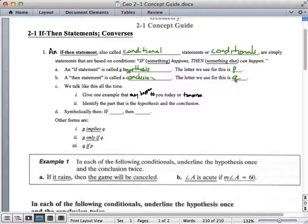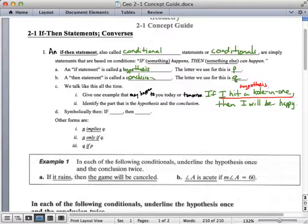And then the letter we use for conclusion is Q. All right, we talk in if-then statements all the time, hypothesis and conclusions. I would like for you to give one example that may happen to you today or tomorrow. Like, here is mine, and then you make up your own. If I hit a hole-in-one, then I will be happy. Okay, so go ahead, pause real quick, and make your own. All right, for me, the I hit a hole-in-one, that's my if part, if I do that, then the conclusion is I will be happy. Okay.